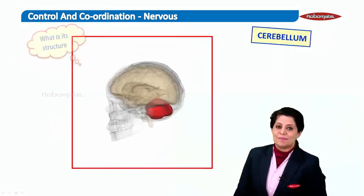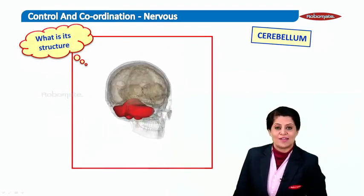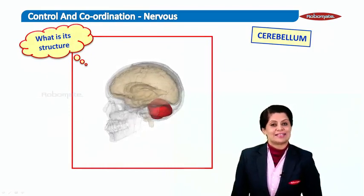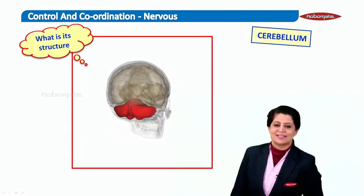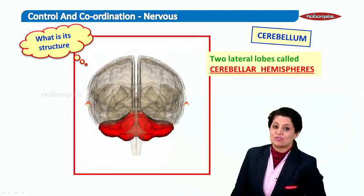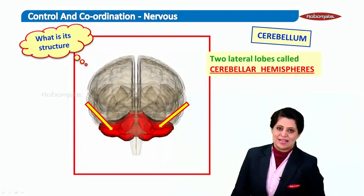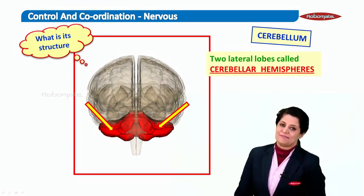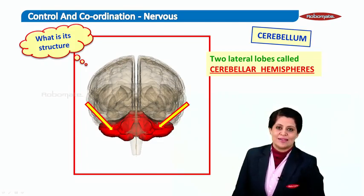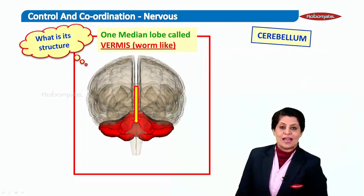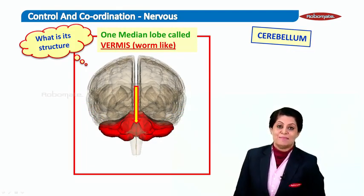Now let's see what is the structure of the cerebellum — how does it look externally as well as internally. Externally, it has got two lateral lobes which are known as cerebellar hemispheres, and right in between is a worm-like lobe which is known as the vermis. The median lobe is called the vermis.